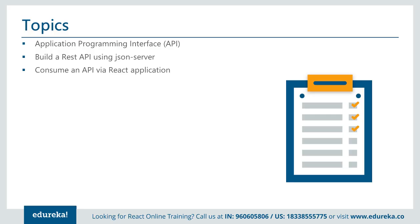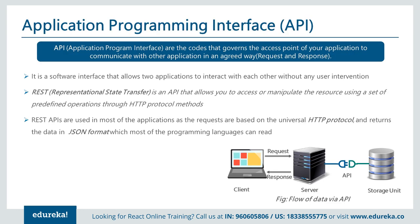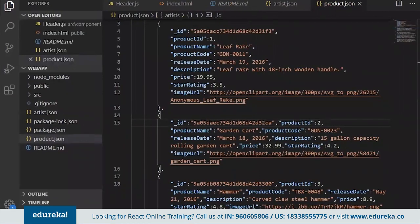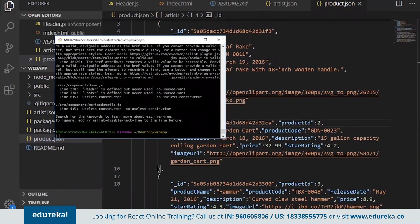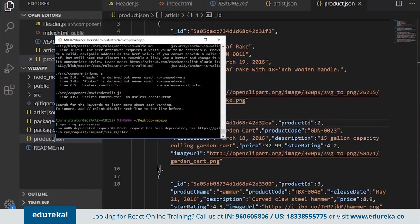First of all, we'll talk about building a dummy API using JSON Server and consuming the API with React. Basically, what happens in real-time is we get an API from a back-end team, but since we're using React and don't have back-end knowledge, we need to make a dummy API. For that we need to install one global package called json-server: npm i -g json-server. This is the one that helps make our dummy API for us.